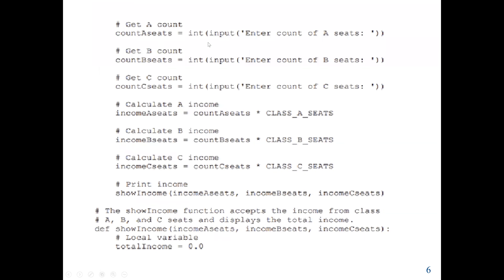Next, we ask the user for the input. We ask them to enter Count_A_seat, Count_B_seat, and Count_C_seat, storing those values accordingly. Now we finish with input and do our calculation. We calculate Income_A as Count_A_seat times Class_A_seat (which is $20). The income for Count_A_seat depends on what the user enters. Similarly, we calculate income for B and C. Income_C will be Count_C_seat times Class_C_seat. Then we call our function showIncome, which will print Income_A_seat, Income_B_seat, and Income_C_seat.